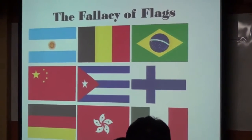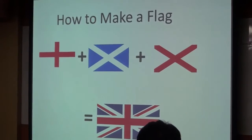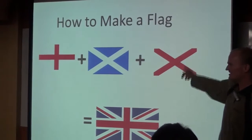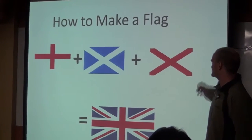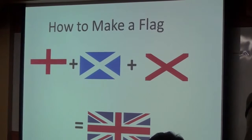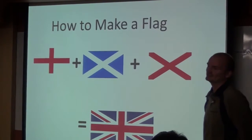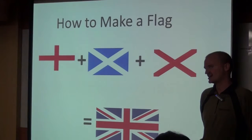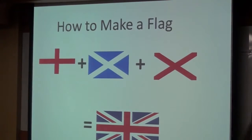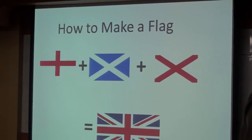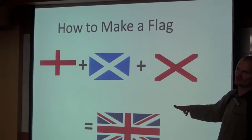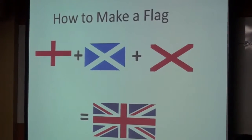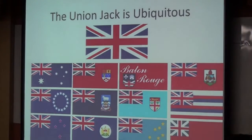How do you make a flag? It's easy. First you have a plus sign, then you have an X, and then you add another red X, and you get the flag of the United Kingdom — otherwise known as the Union Jack. This is how they made their flag. They took three countries into one. What did they do with this idea? They put it on every other flag.